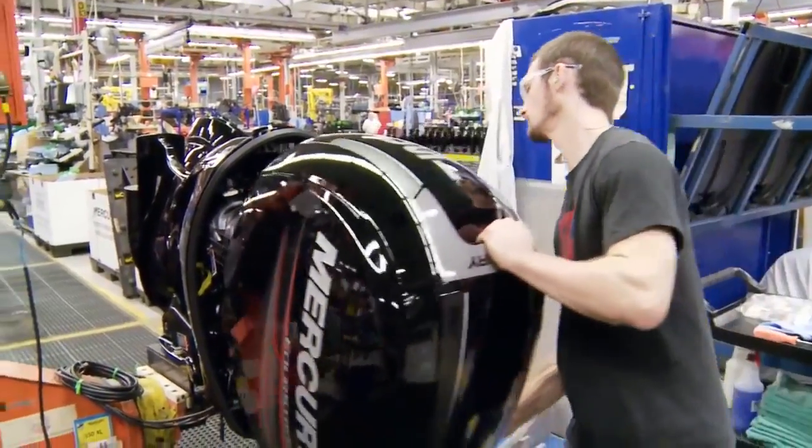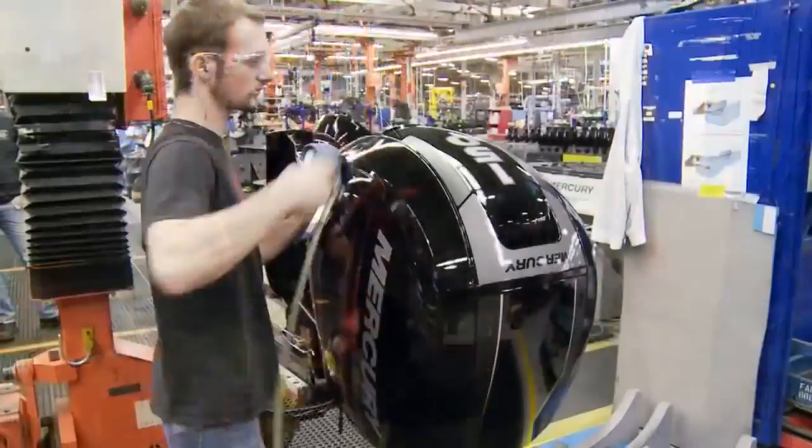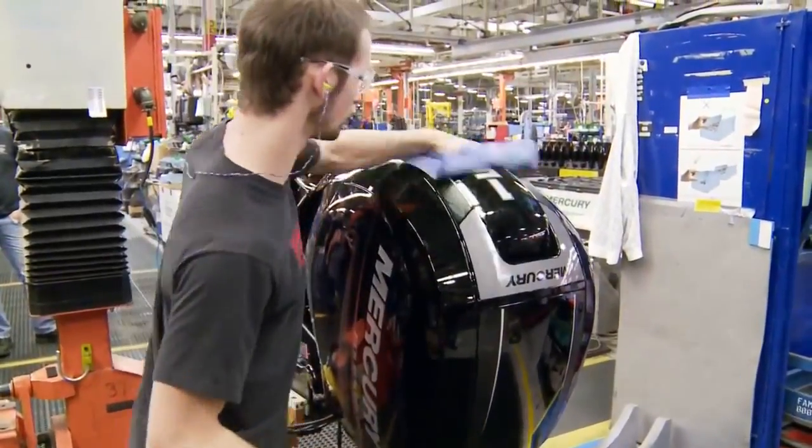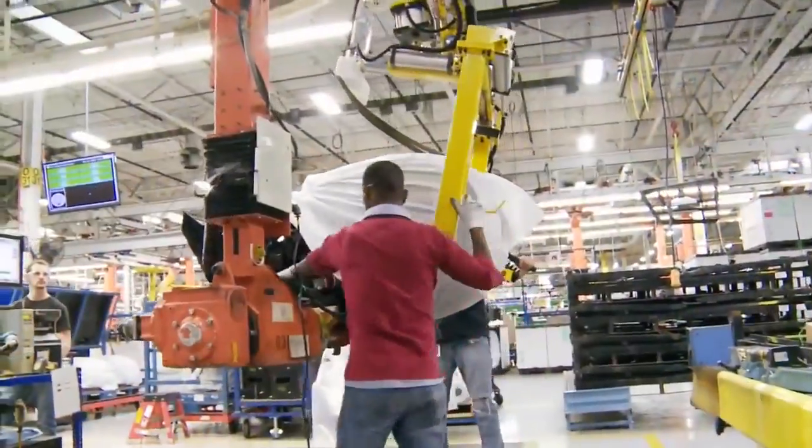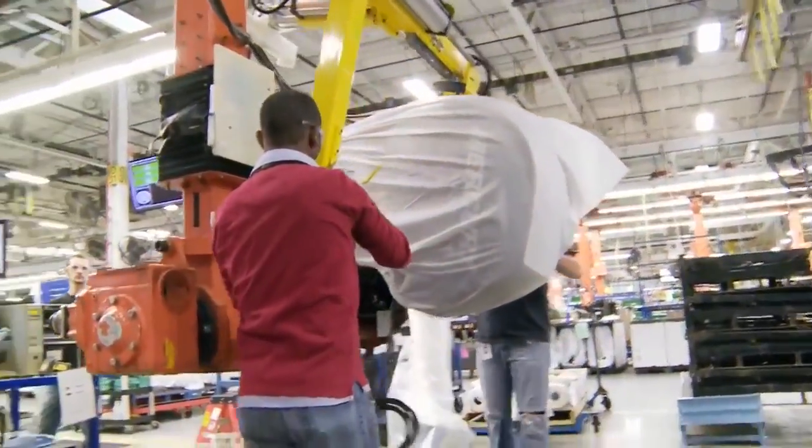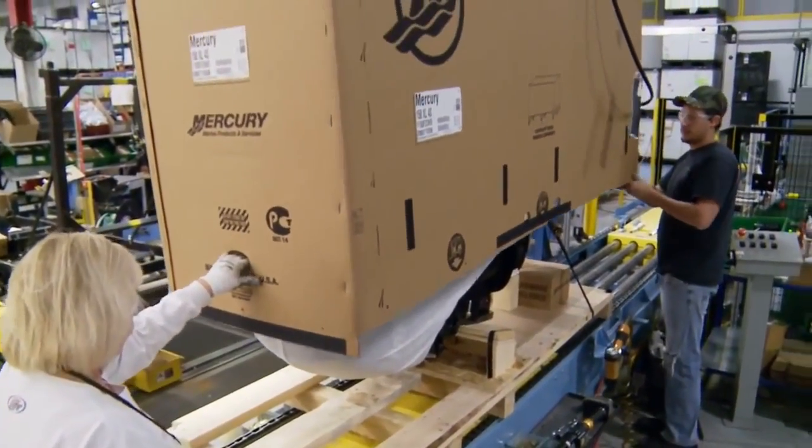The final steps include installation of the outer midsection chaps, grommets, and upper cowl, and giving it a thorough cleaning before it's wrapped and crated. The outboard is now ready to be shipped to your local Mercury dealer or one of the many boat builders that choose Mercury to power their boats.